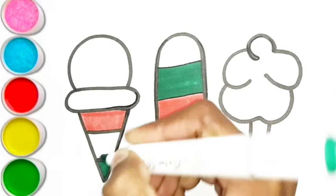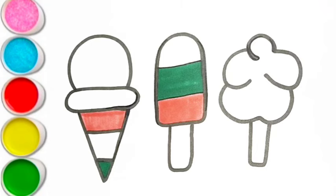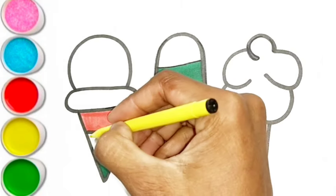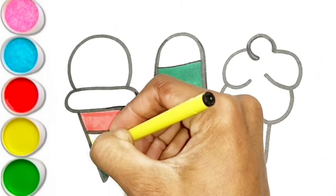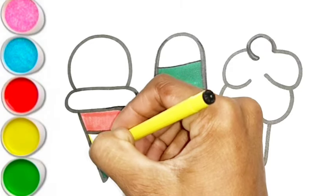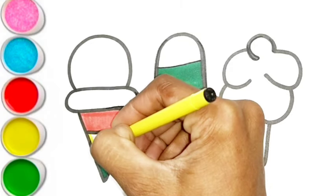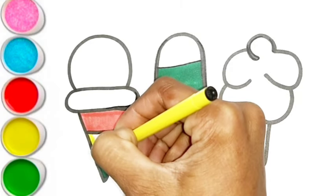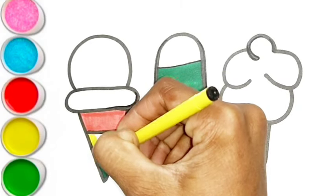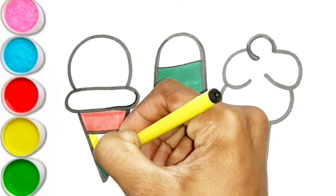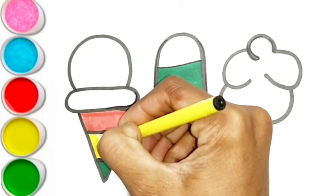M is for mat. M, m, mat. N is for net. N, n, net. O is for orange. O, o, orange.